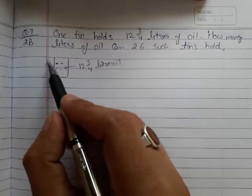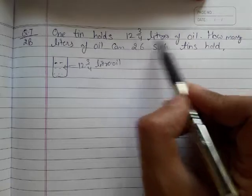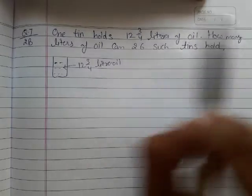Now question number seven from exercise 2b. One tin holds 12 and 3 over 4 liters of oil. How many liters of oil can 26 such tins hold?